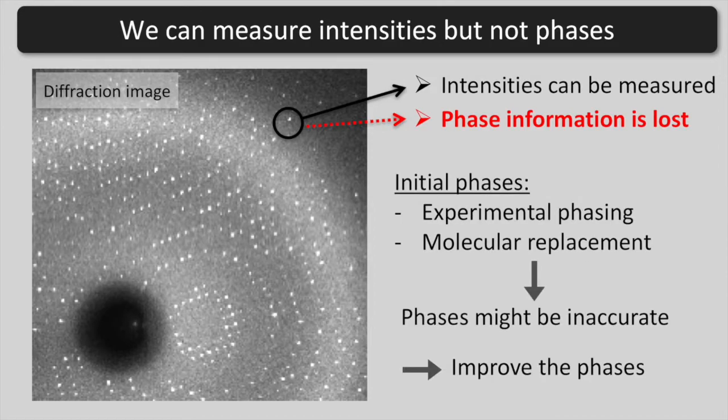Initial phases can be obtained using experimental phasing methods or molecular replacement. In both cases, the initial phases may be inaccurate because of experimental errors, low signal to noise, or model bias. Therefore it is usually necessary to improve the phases by exploiting our prior knowledge about electron density distributions in crystals.